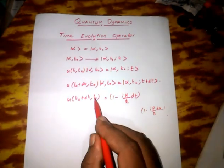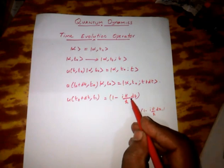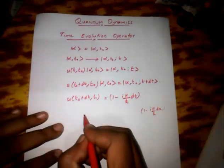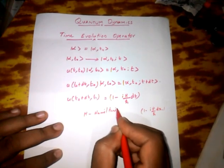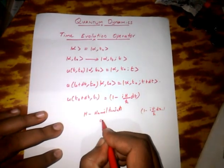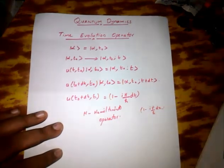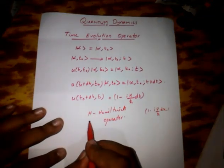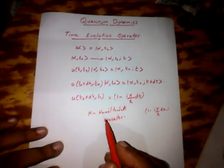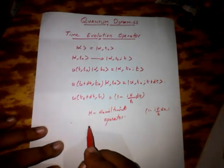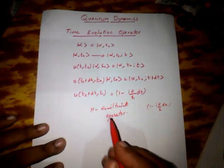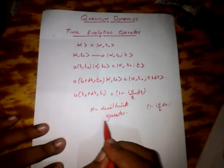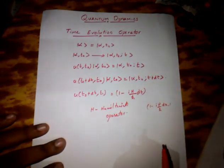So directly we take U(t-naught + dt, t-naught) = 1 minus iH divided by h-cross times dt, where H is the Hamiltonian operator. The Hamiltonian operator is related to the energy of each particle in a state — that is, mechanical energy, meaning kinetic energy plus potential energy. So the Hamiltonian operator measures the total energy of a system.